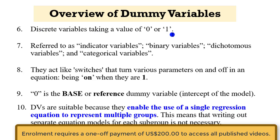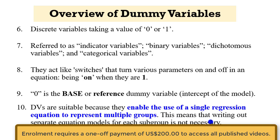Dummy variables are discrete variables taking a value of 0 or 1. They are also referred to as indicator variables, binary variables, dichotomous variables, and categorical variables. They act like switches that turn various parameters on and off in an equation, being on when they are coded as 1. 0 is often the base or reference dummy variable, which equates to the intercept of the model. Dummy variables are suitable because they enable the use of a single regression equation to represent multiple groups.